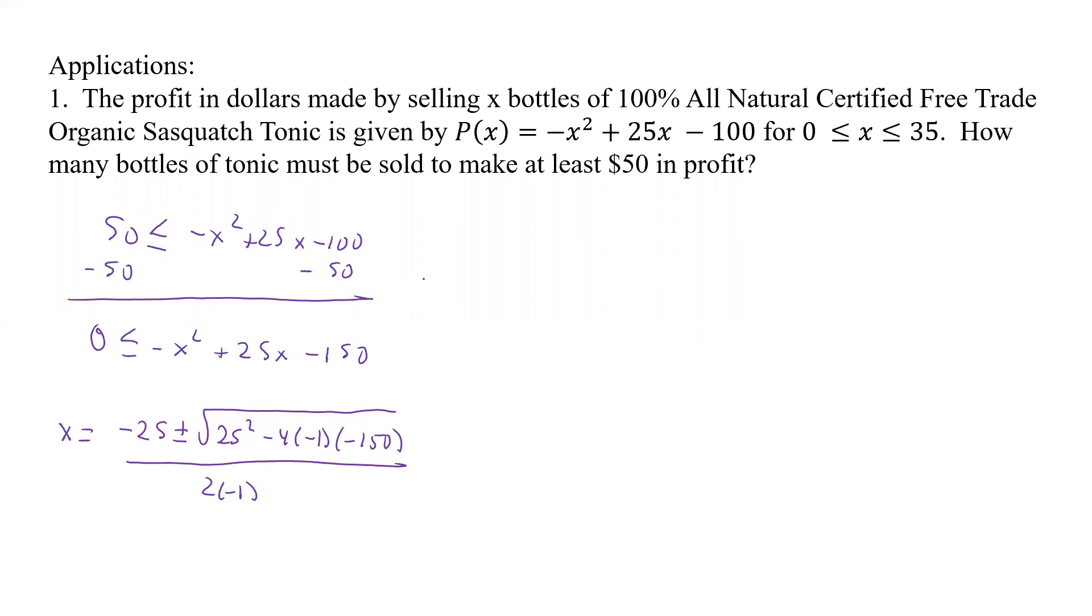Alright, so it looks like we get x equals, and it's going to be a minus 25 still, plus or minus 5 all over the negative 2. So that gives us two options. I have a minus 25 plus 5, so it's a minus 20 over a minus 2. And then we get a minus 25 minus 5, so it's a minus 30 over a minus 2. So this one is 10 or 15.